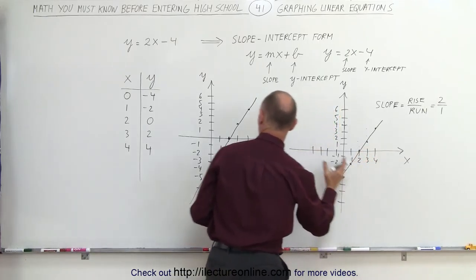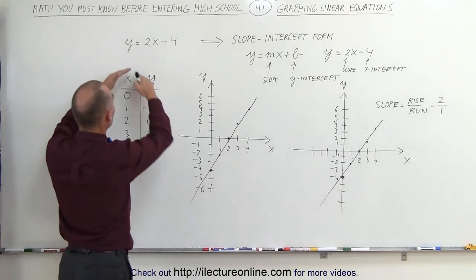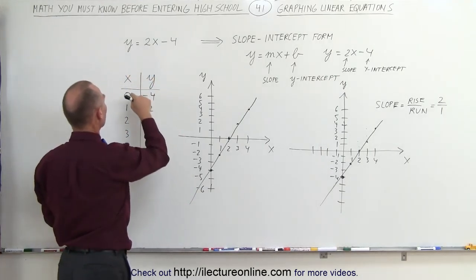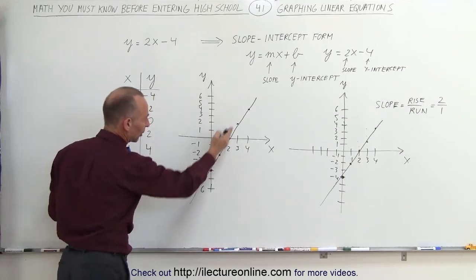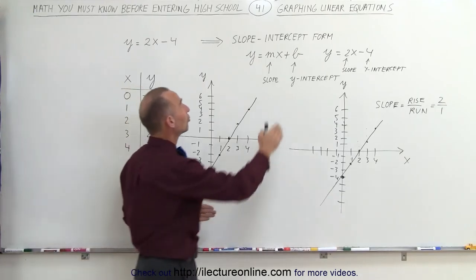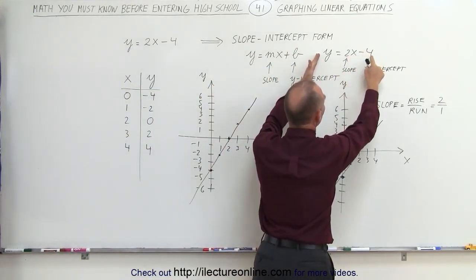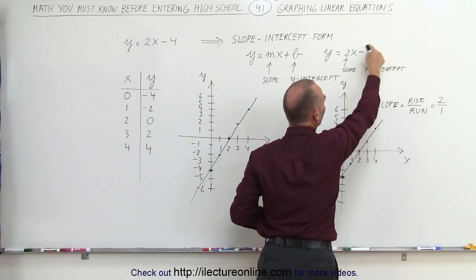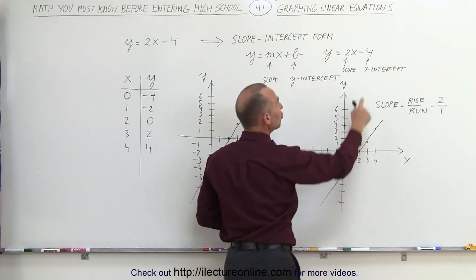Which means we can draw a linear equation simply by making a table of values, plugging in specific values for x and then getting corresponding values for y, putting them on the xy-plane and connecting them, or we can use the slope-intercept form. Here's the equation, slope-y-intercept. Find the y-intercept, the place where it crosses the y-axis.